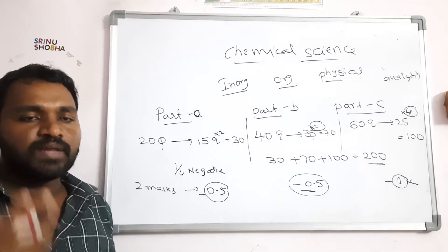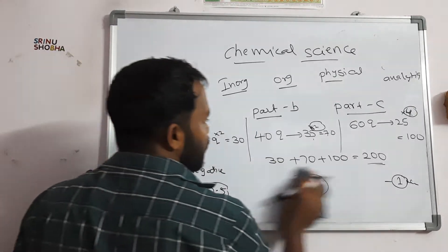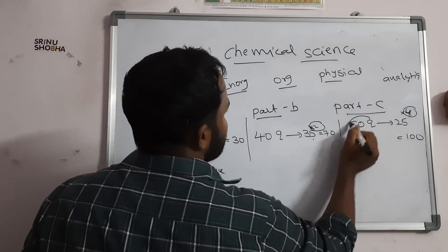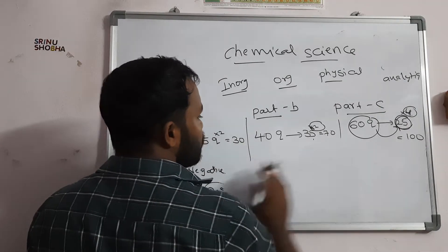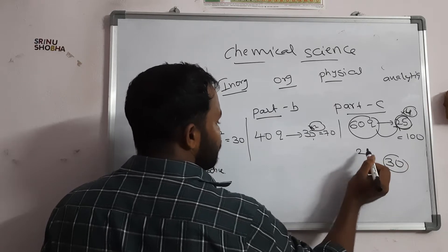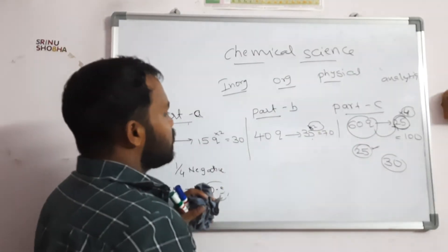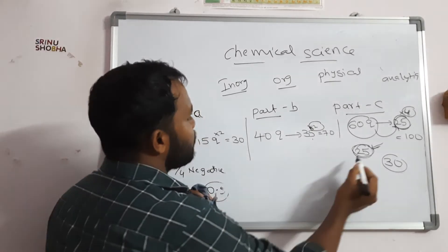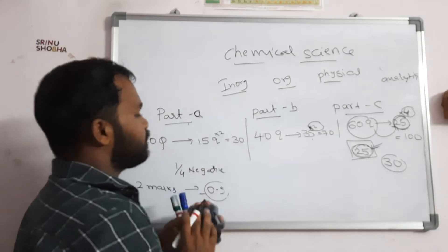Many people have this doubt: if you attempt more than the required number, say more than 25 questions in Part C, the system will not accept it. The system will accept only up to 25 questions. After 25 answers, it will not take any more. So we have to do only a maximum of 25 questions — keep only the correct ones.